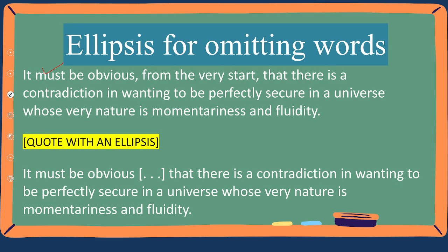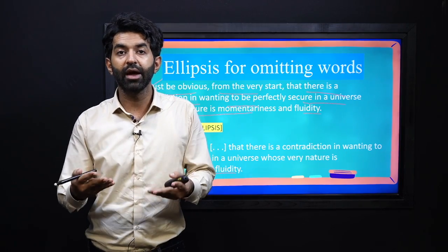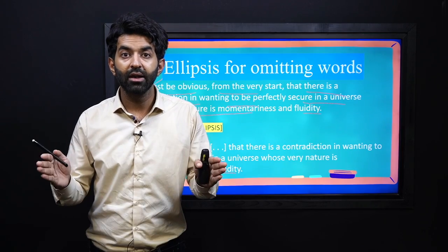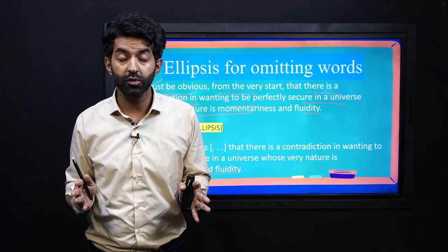Now let's look at a quote without ellipsis and with ellipsis. Without ellipsis: 'It must be obvious from the very start that there is a contradiction in wanting to be perfectly secure in a universe whose very nature is momentariness and fluidity.' With ellipsis: 'It must be obvious... that there is a contradiction in wanting to be perfectly secure in a universe whose nature is momentariness and fluidity.' You can see how ellipsis creates an effect in the text — showing hesitation, trailing of thought, or silence — making the reader pause and think.